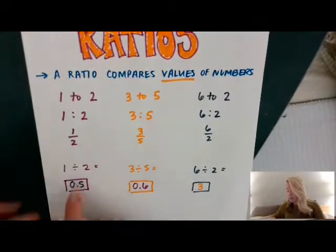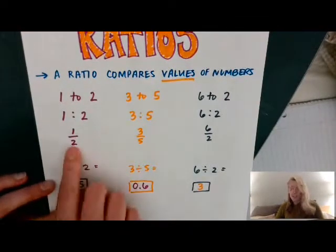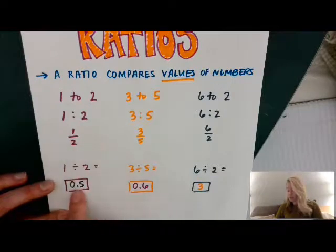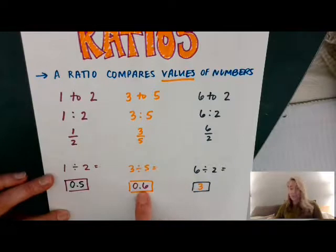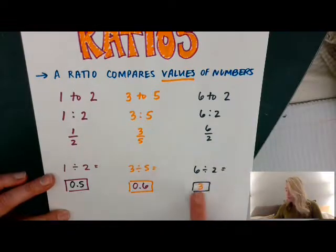To put it into a decimal, all you have to do is treat that like a division problem. So 1 divided by 2 is 0.5, 3 divided by 5 is 0.6, and 6 divided by 2 is 3. Sometimes you're going to get numbers that are less than 1, sometimes more than 1.